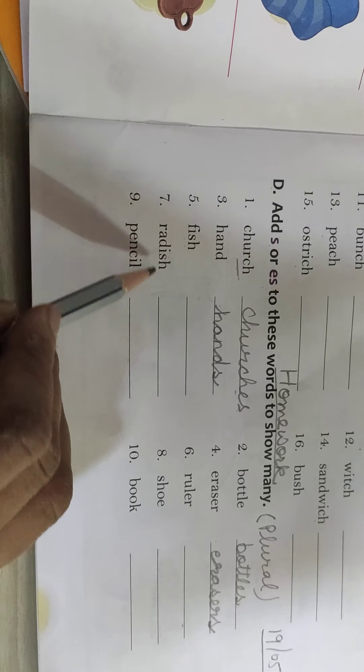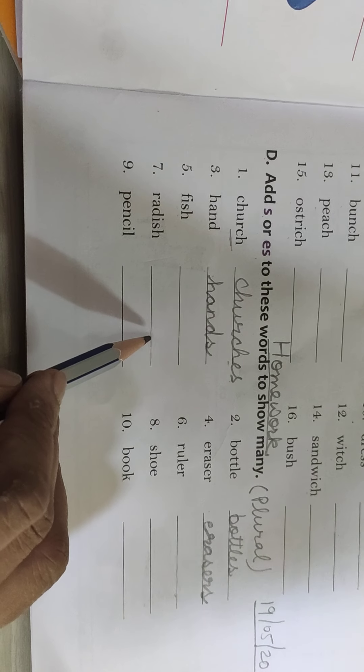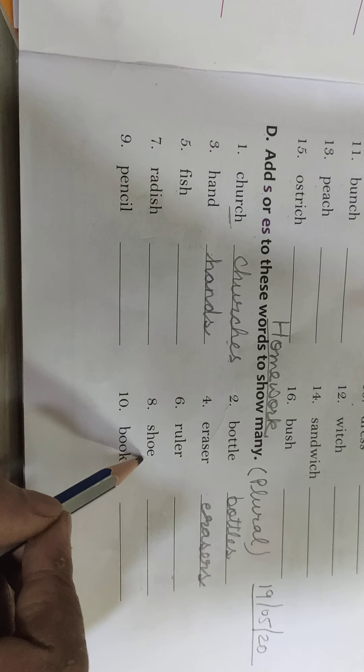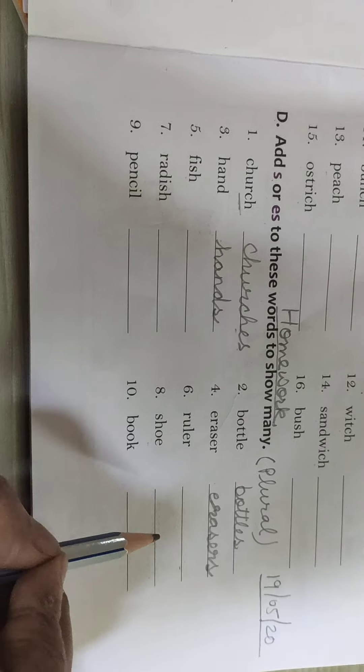You can write is. Isko plural form karne ke liya fish bhi licks sakti hai aur fishes bhi licks sakti hai. Ruler. Rulers. Radish. Radishes. Shoe. Shoes. E hai. Already E hai. Toh only we will add S.